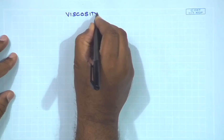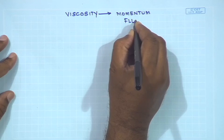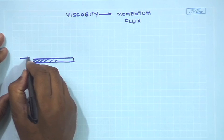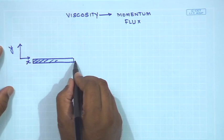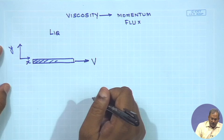We start with the concept of viscosity, which will then lead to the idea of momentum flux. For this, I draw a simple system in which there is a solid plate — this is my x-direction, and perpendicular to this is the y-direction — and there is a liquid on top of the plate. The solid plate is moving with a velocity v.